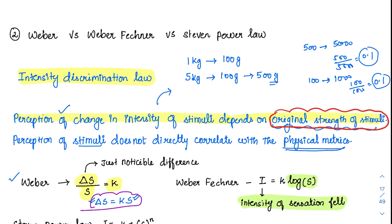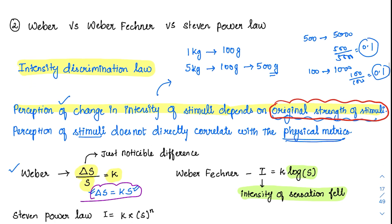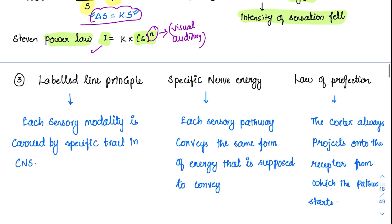Stevens found that it is not the logarithmic scale which best corresponds to the perception of stimulus. He said it is the power law — that is why it is called Stevens' power law. The intensity of stimulus felt is proportional to the power N. He specifically said that N is not the same for all different stimuli. For a visual stimulus, N can be 1.5; for an auditory stimulus, N can be 1. Stevens' power law was able to explain intensity discrimination for different stimuli, and all three laws are still valid.